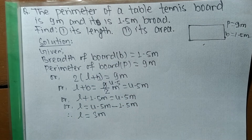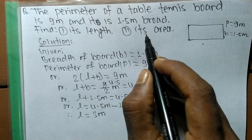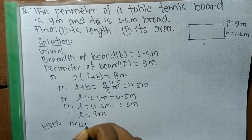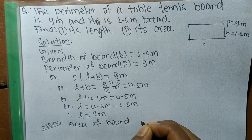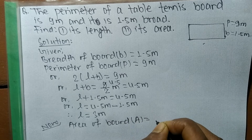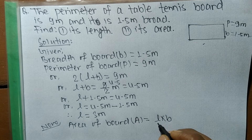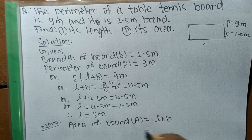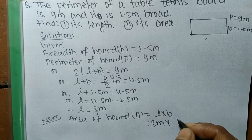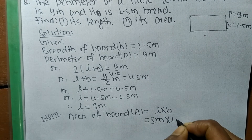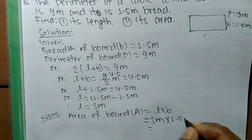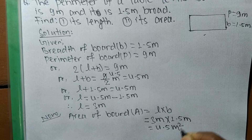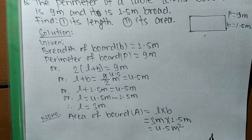Now we find the area. The area of the table tennis board, denoted by A, equals l times b, where l is the length and b is the breadth. We have l equal to 3.5 meters and b equal to 1.5 meters. So 3.5 times 1.5 equals 5.25 — wait, the speaker states the product as 4.5 — so the area equals 4.5 square meters.